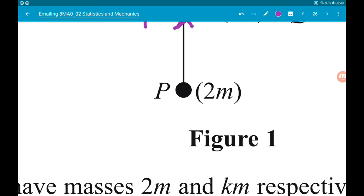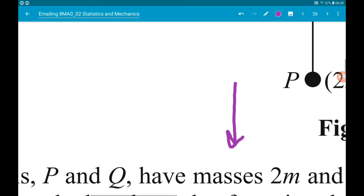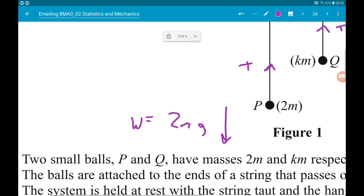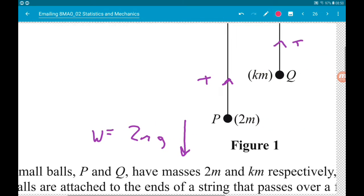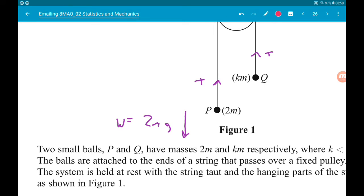Well, we know that we have a weight acting downwards. So the weight is mass times gravity. So this is going to be 2M times G. Now we also know that force is mass times acceleration. So we also know that the ball is moving downwards overall.